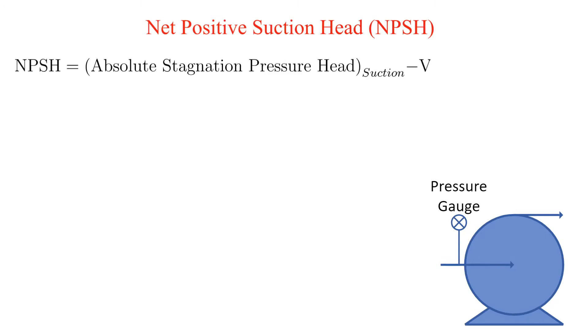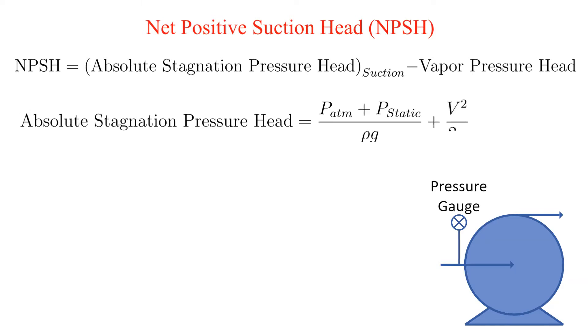Okay, let's define net positive suction head. Net positive suction head is defined as the absolute stagnation pressure head at the pump suction minus the vapor pressure head. It is important to stress that we use absolute pressure for NPSH calculations. Vapor pressure is also an absolute pressure.